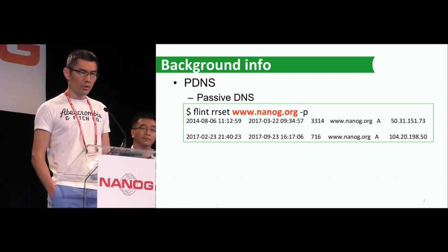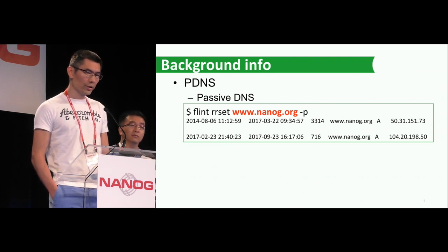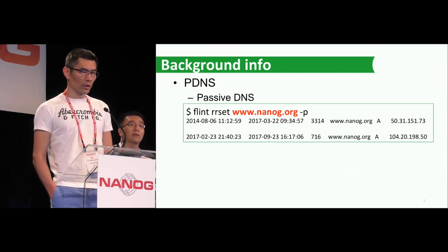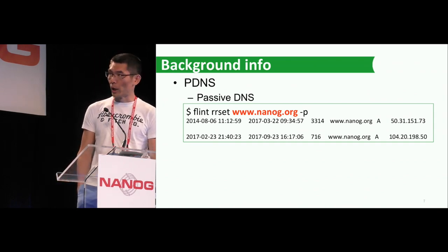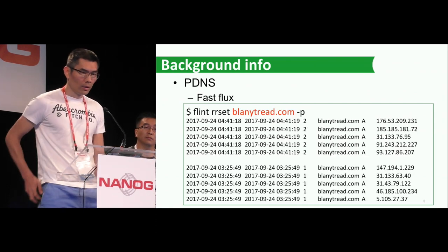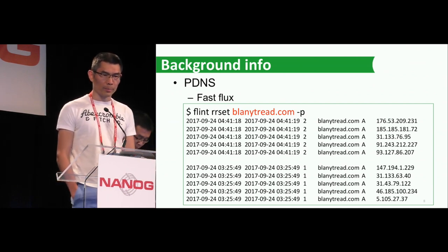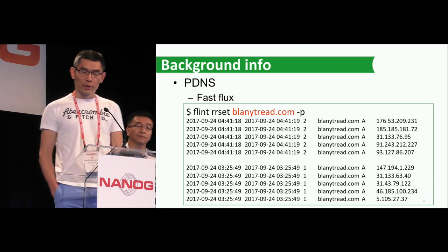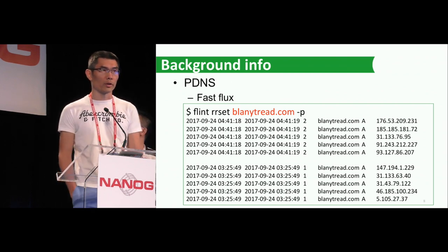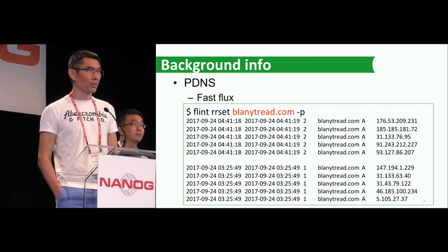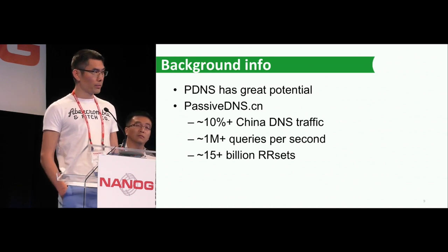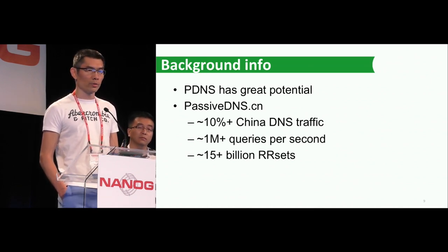For example, the first line here shows that from late 2014 to earlier this year, Nanoc was pointed to this 50.31 IP address. The second line shows that from earlier this year to now, Nanoc is pointing to this 104 IP address. Another example of PDNS: blanytread.com. You can tell that this domain changes its IP all the time — this is a very typical fast-flux domain. Normally this type of domain is up to no good; it's safe to just block the domain.